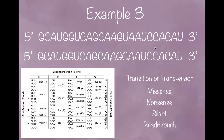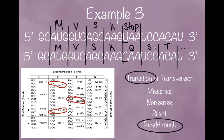Now pause the video and see if you can work through example number three. Hopefully you got this point mutation correct. Since it had a pyrimidine to pyrimidine base change, it is a transition. And since it changed the stop codon to an amino acid, it's a read-through point mutation.